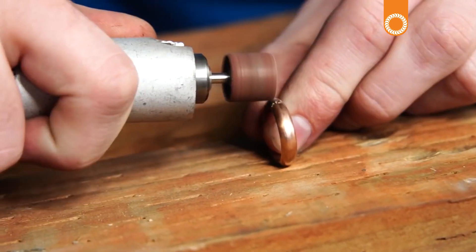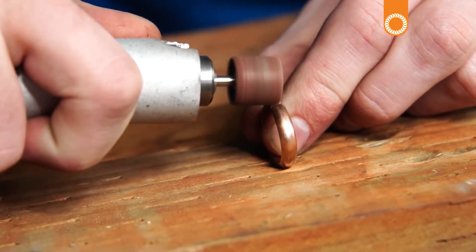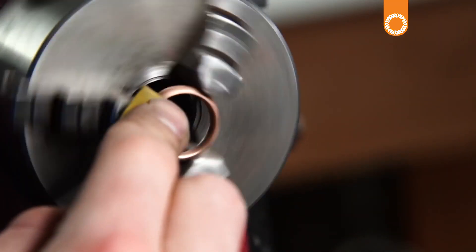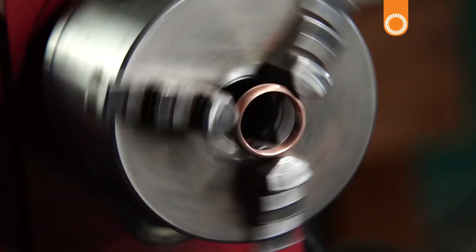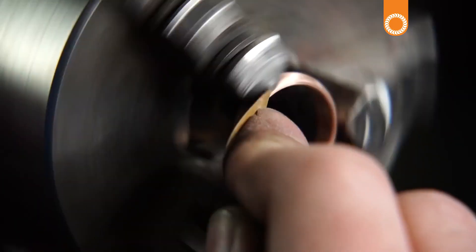I go through all the different grits of sandpaper, starting at 220 and ending at 1500, then hit it with Astrotech polish to give it that final mirror reflective finish.